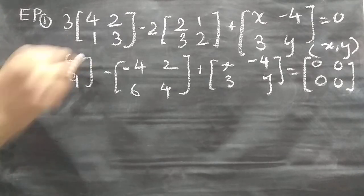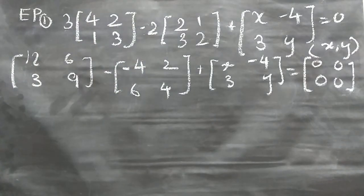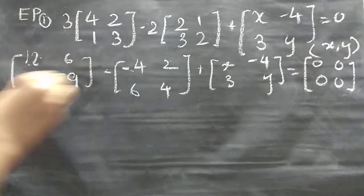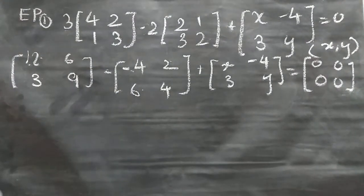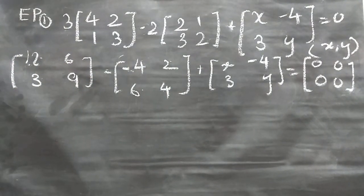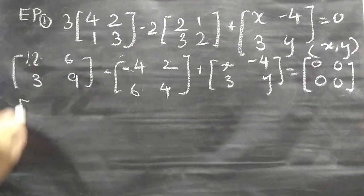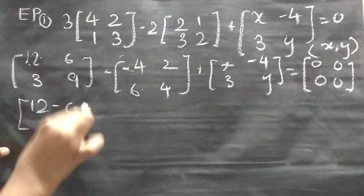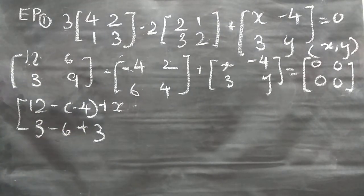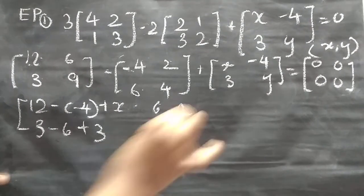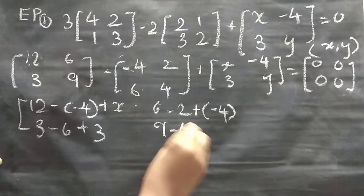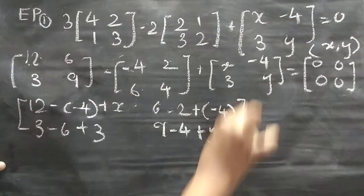Now we are going to perform all the operations. So: 12 minus (−4), 6 minus 2, 3 minus 6, 9 minus 4. Then plus this matrix as written: x minus 4, and so on. In a single step: 12 minus (−4) plus x; below that, 3 minus 6 plus 3. And 6 minus 2 plus (−4); below that, 9 minus 4 plus y, equal to the zero matrix.